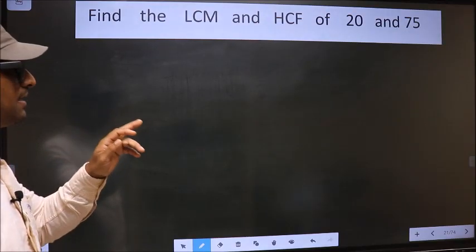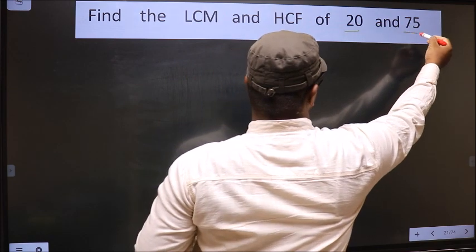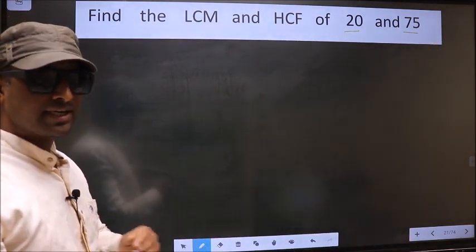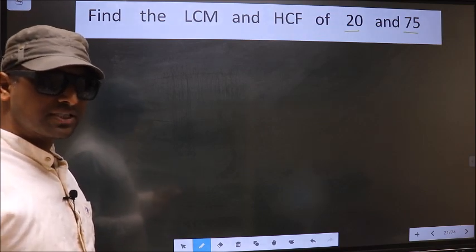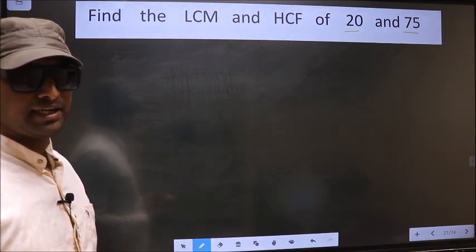Find the LCM and HCF of 20 and 75. To find the HCF and LCM, first we should do the prime factorization of each number separately.